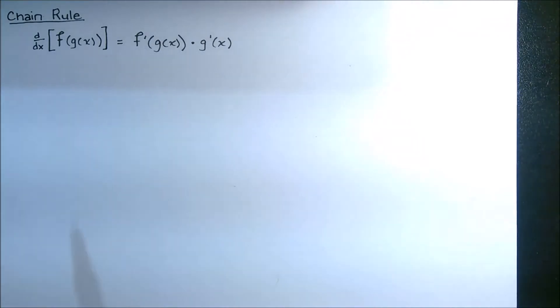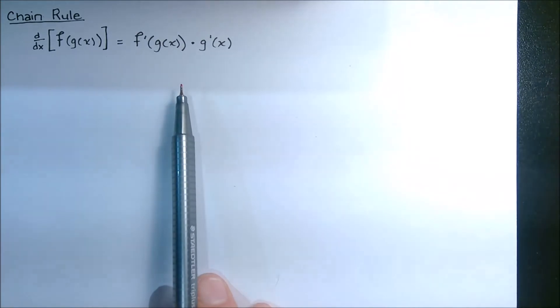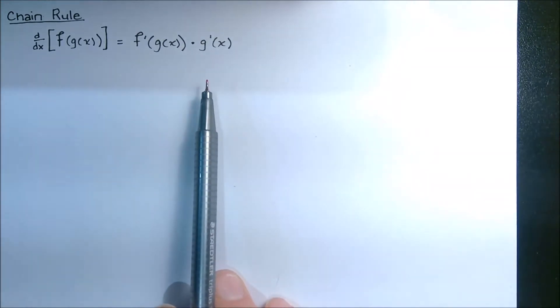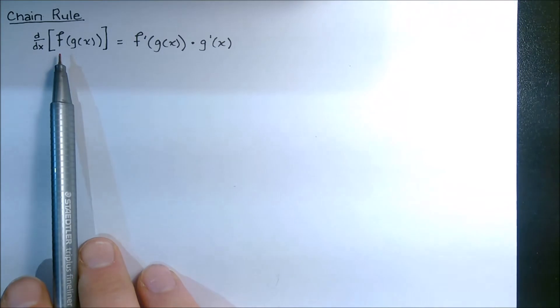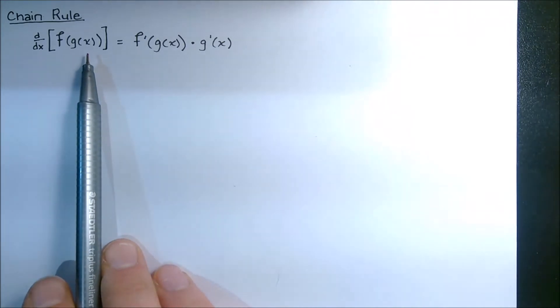All right, so we have the chain rule, which basically states that you can take the derivative of a function that is a composition of other functions. I've written it out in the most general term, where the function f is a function of yet another function, g.